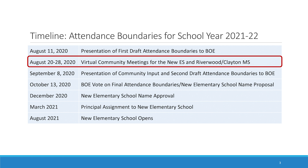October 13th will be the final board vote on the attendance boundaries. There are some additional items after the 13th, such as naming the new elementary school in the Thanksgiving area, as well as appointing a principal to the new school before it opens in August of 2021.